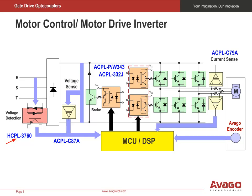Voltage detection is via an Avago HCPL-3760. Each IGBT is driven by an isolated gate driver channel using an ACPL-332J, ACPL-P343, or ACPL-W343. A total of six isolated gate drive channels are needed for the three-phase inverter, plus another isolated gate driver to drive the IGBT in the braking system. Each phase current can be sensed by our isolated current sensor amplifier, the ACPL-C79A, but only two are needed as the third phase current can be derived. An isolated voltage sensor, the ACPL-C87A, senses the DC bus voltage. The sensor outputs are fed to the microcontroller unit or DSP to determine how to drive the isolated gate drivers.